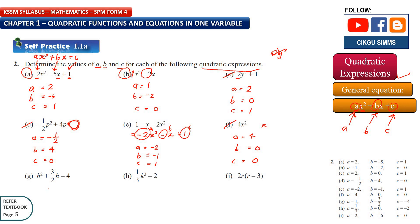Question 2g: h squared plus 3 over 2h minus 4. Your a is 1, because 1 times h squared is h squared. So b is 3 over 2, and c is negative 4, which is the constant. For question 2h, what's in front of k squared is 1 over 3, so a is 1 over 3. B is nothing, so 0. C is the number negative 2.